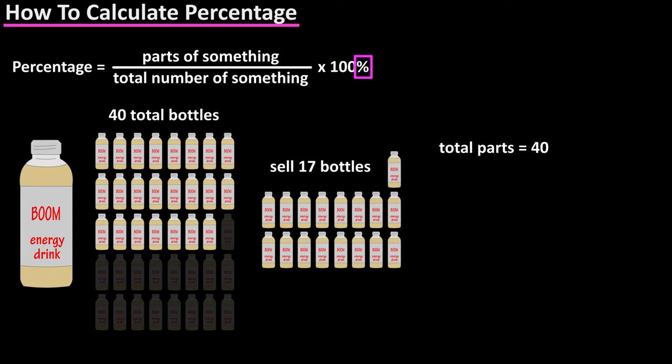Let's say that you sell 17 bottles, so the number of parts sold is 17. To find the percentage sold, we put the number of parts sold over the total number, so 17 over 40.